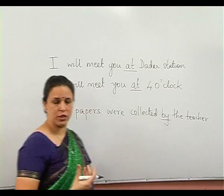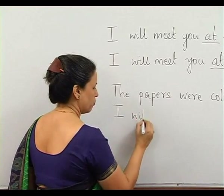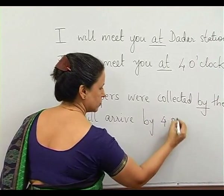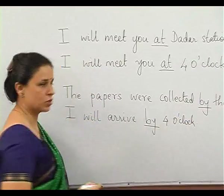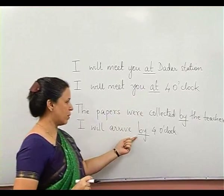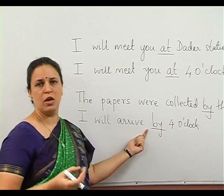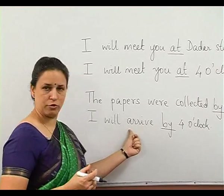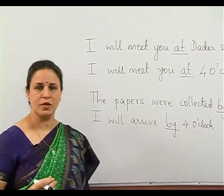Now this same 'by' can be used so differently in a different sentence: 'I will arrive by 4 o'clock.' Please note, when we said 'at 4 o'clock' it showed the exact time. When I say 'by 4 o'clock' — char baje tak — that means it might be 5 minutes to 4 that I will reach, but by 4 I will surely arrive. So this meaning of 'by' is very different from the previous meaning of 'by'. Can you see the difference?